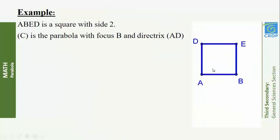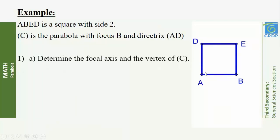Example: ABCD is a square with side 2. C is the parabola with focus B and directrix AD. Determine the focal axis and the vertex of C. The focal axis is the line through focus B perpendicular to directrix AD, which is the line AB. Let V be the vertex of C; V is halfway from focus B to directrix AD, so V is the midpoint of AB.